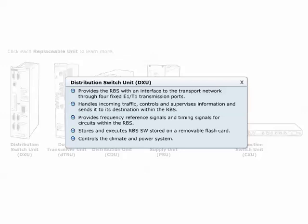The distribution switch unit, DXU, serves as the central main CPU node. There is one DXU per RBS. DXU provides the RBS with an interface to the transport network through four fixed E1-T1 transmission ports. It handles incoming traffic, controls, and supervises information and sends it to its destination within the RBS. DXU provides frequency reference signals and timing signals for circuits within the RBS. It stores and executes RBS software stored on a removable flash card. The DXU also controls the climate and power system.